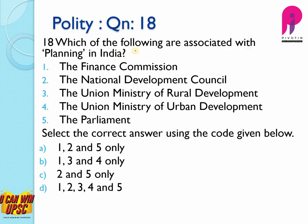Question number 18: which of the following are associated with planning in India? The Finance Commission is not involved in planning; it is just responsible for distributing taxes and grants between centre and states. The NDC — yes, this is correct. The Planning Commission, after preparing its five-year plan, gives it to the NDC, which then approves it and forwards it to parliament for approval. So 2 and 5 are correct and others are not involved in planning. The answer is C, 2 and 5.